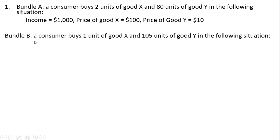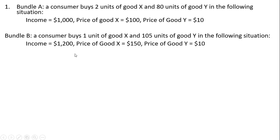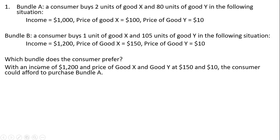Bundle B — the consumer chooses bundle B, which consists of one unit of good X and 105 units of good Y, when the consumer has an income of $1,200, the price of good X is $150, and the price of good Y is $10. Our goal here is to determine which bundle the consumer prefers, bundle A or bundle B — which bundle gives the highest level of utility.